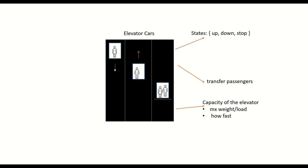The second property is how fast the elevator car can go up or down, because that defines how much time a passenger takes when moving from one floor to another. The third is the maximum number of passengers an elevator car can take.